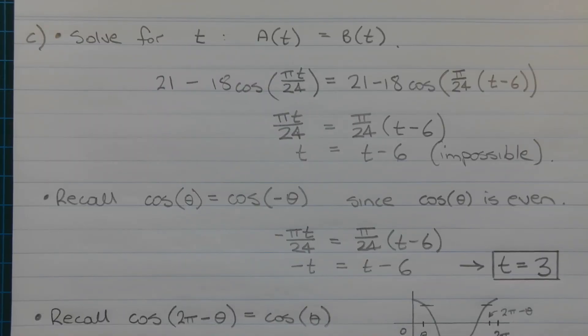We want to find the times when both carriages are at the same height above the ground. So we want to solve for t the equation A(t) equals B(t). 21 minus 18 cos(πt/24) equals 21 minus 18 cos(π/24 times (t - 6)). Now the two 21's will cancel. We can also divide both sides of the equation by negative 18. Also we can take the inverse cos of both sides of the equation. So we're left with πt/24 equals π/24 times (t - 6). Multiplying both sides of the equation by 24, dividing both sides by π, we get t equals t minus 6. And that's impossible.